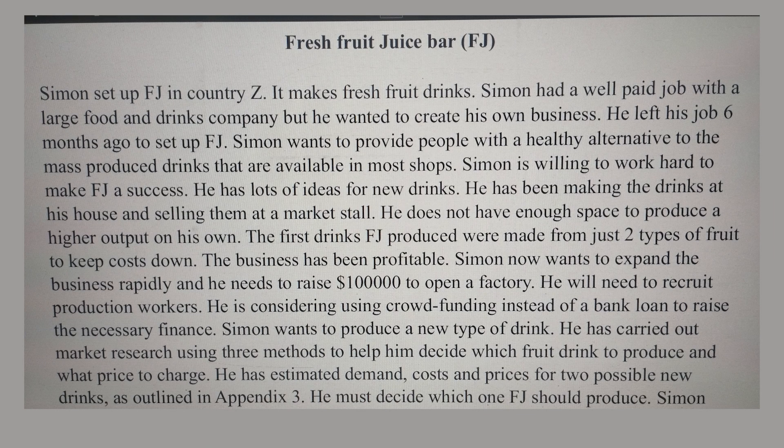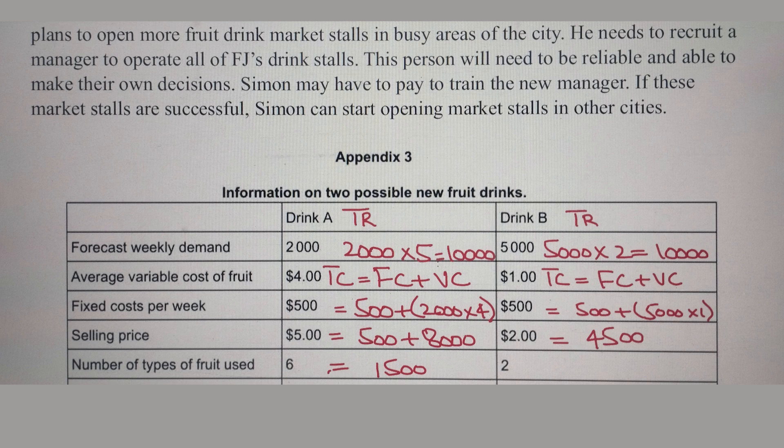The first drinks FJ produced were made from just two types of fruits to keep costs down. The business has been profitable. Simon now wants to expand the business rapidly and he needs to raise $100,000 to open a factory. He will need to recruit production workers. He is considering using crowdfunding instead of a bank loan to raise the necessary finance.